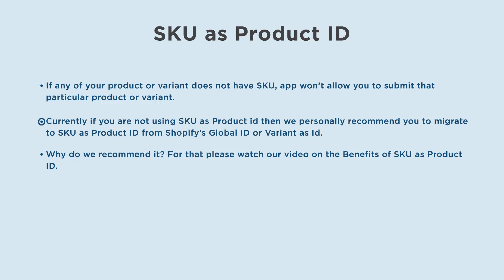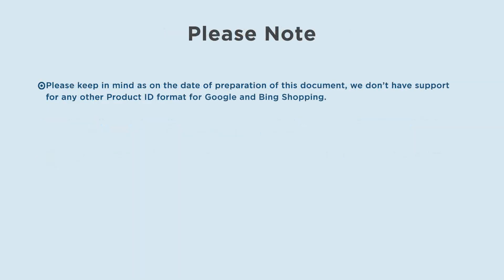Currently, if you are not using SKU as Product ID, we personally recommend you migrate to SKU as Product ID from Shopify's Global ID or Variant as ID. For Google, SKU has a limit of 50 characters and does not allow more than 50 characters. It is recommended to select SKU as ID only if SKUs are unique to each and every variant. For why we recommend it, please watch our video on the benefits of SKU as Product ID — the link is given in the description below. Please keep in mind that we don't currently have support for any other product ID format for Google and Bing Shopping.